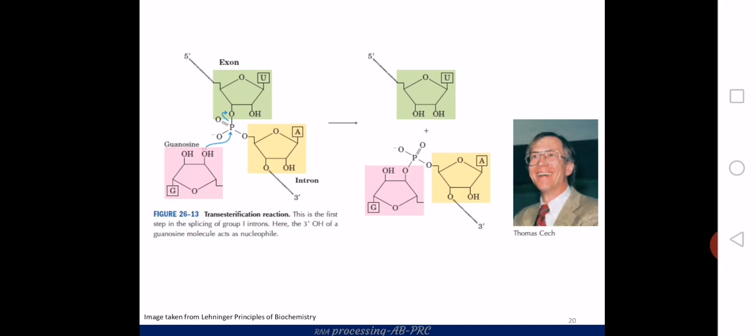This reaction is a transesterification reaction. The OH group of the guanine residue, with its free electrons, attacks the phosphate group of the intron. There is a shifting of electrons and ultimately a cleavage occurs.